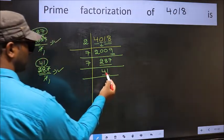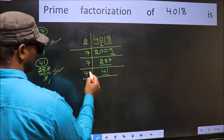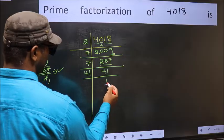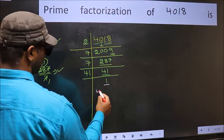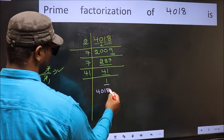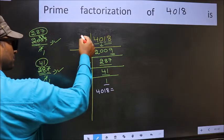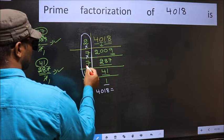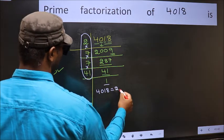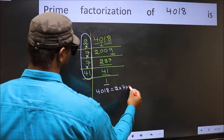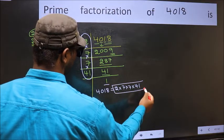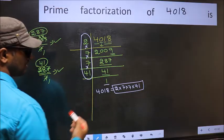Now, we have 41. 41 is a prime number. So, 41 once 41. We got 1 here. So, the prime factorization of 4018 is the product of these numbers. That is 2 into 7 into 7 into 41. This is the prime factorization of 4018.